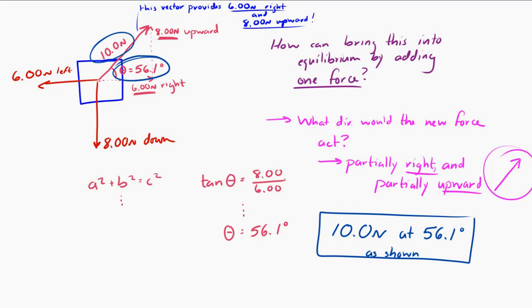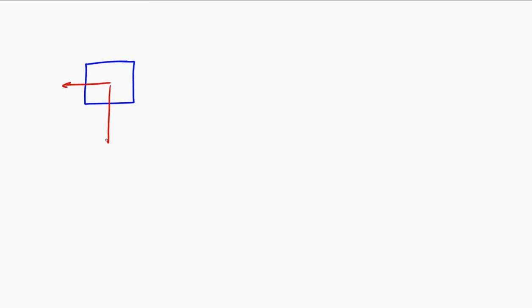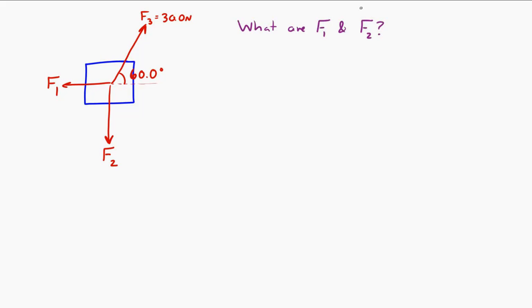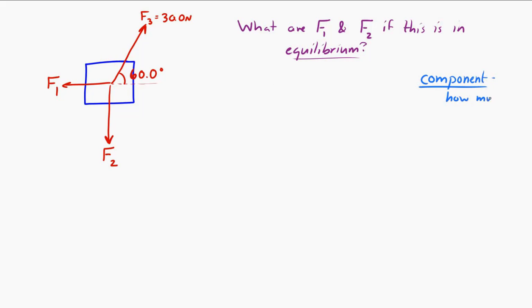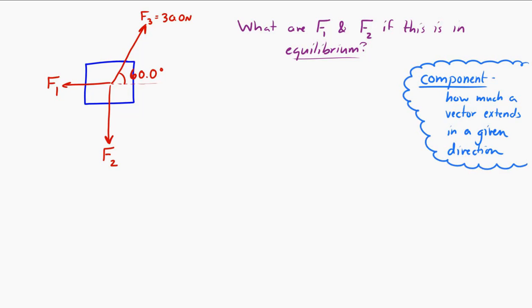Now I'm going to ask a similar but slightly different question. Let's say I have three forces acting on an object: a force to the left, a force downward, and a force at a 60 degree angle as shown. That third force at the 60 degree angle equals 30 Newtons. The question is: what are F1 and F2 in order to bring this into equilibrium? This leads us to the concept of components — how much a vector extends in a given direction. Let's look at that 30 Newton force and think about how far it extends in the X (horizontal) and Y (vertical) directions, shown by drawing a triangle.